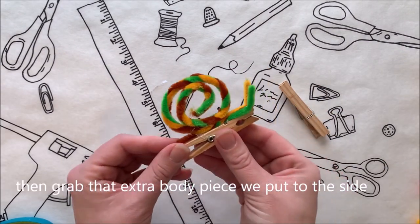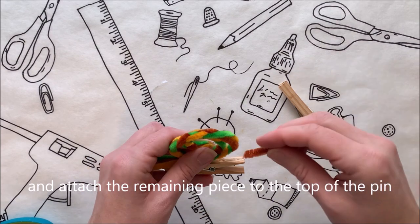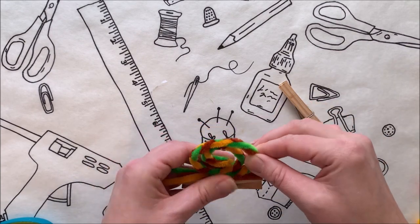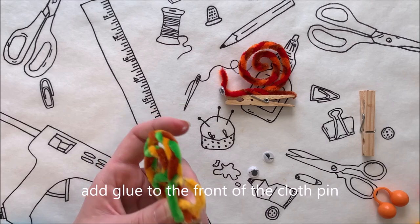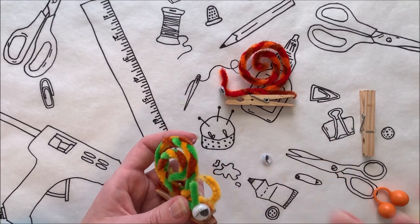Now bend the two remaining pipe cleaners. Then grab that extra piece we put to the side, add a dab of glue to the back end, and attach the remaining piece to the top of the pin. Now for the googly eyes. Add glue to the front of the clothes pin and attach the snail's eyes.